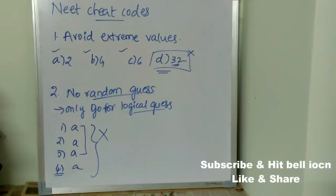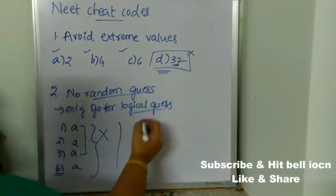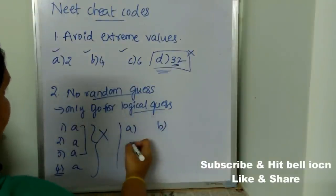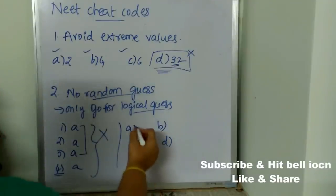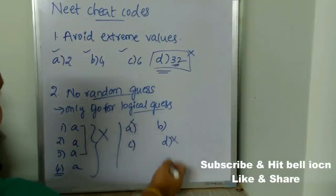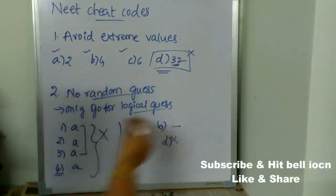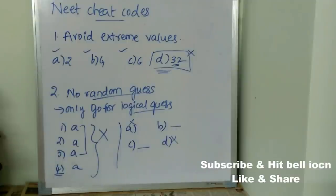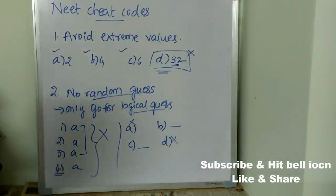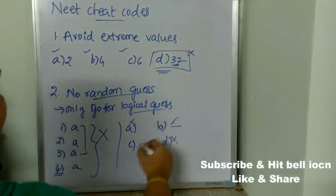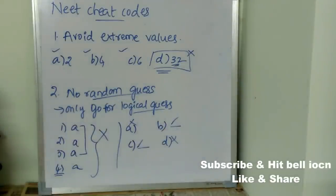Logical guess means you are confident that two options are incorrect and you're only confused between the remaining two — say B and C. At that point, use your logic to choose between them. Logical guessing is acceptable, but random guessing is completely wrong and should not be followed.